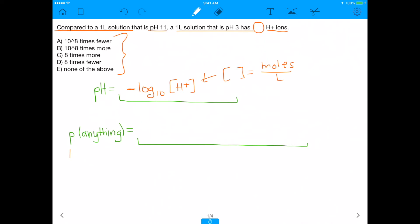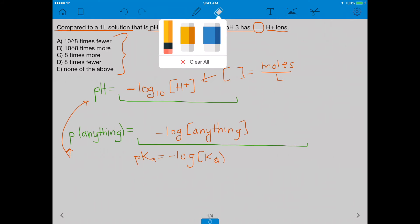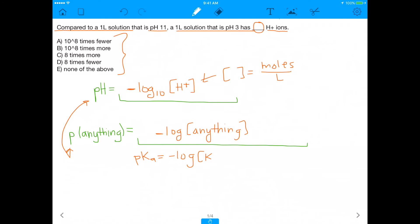I also want you to know that P anything, so we have pH here, right? But if you had P of anything, that basically means negative log of that anything. I'm sure you've seen this a lot because there's also PKA, which is negative log of the KA, PKB is negative log of KB. So the point is, you have a lot of different applications of the P, and that's why I want to make sure you understand it. So with that, let's get into how to do this problem in particular.